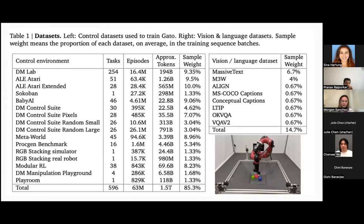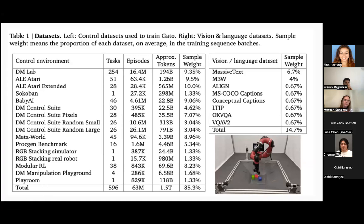They trained this model on a whole bunch of data: a number of control environments with a varying number of tasks, vision and language datasets like COCO, and one of the control environments is a real environment with a real robot stacking blocks.